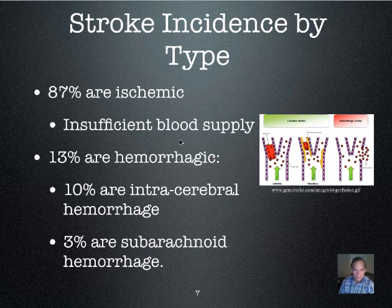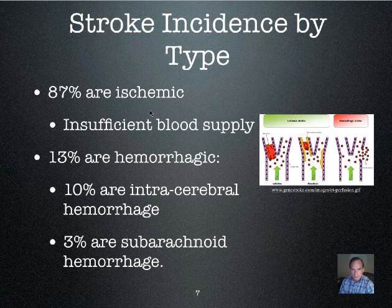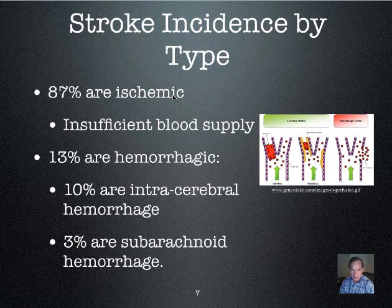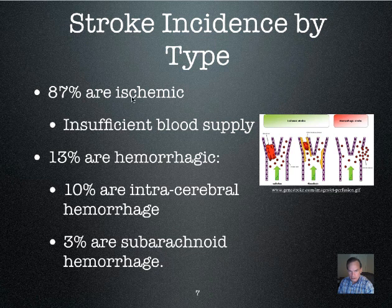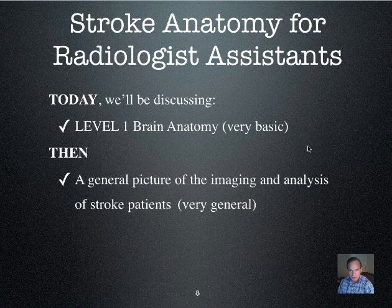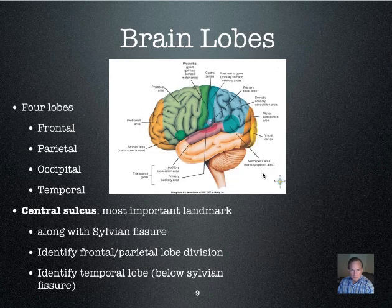Stroke is a lay term, not necessarily a medical term, but it reflects a clinical finding. A stroke is somebody who comes in with a sudden onset of a neurologic deficit. The big question to be asked is: is it ischemic — due to a lack of blood supply — or is it hemorrhagic? That is the first and foremost question, and imaging can allow us to make that determination.